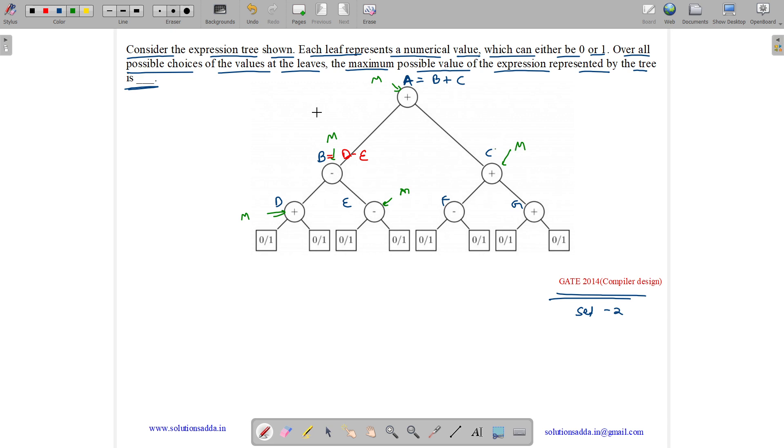C value is given by C equals F plus G. We need to maximize C. For C to be maximum, F and G should be maximum.